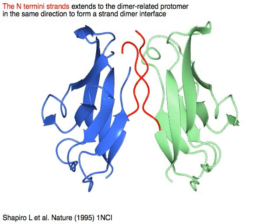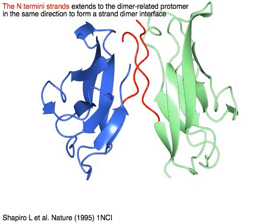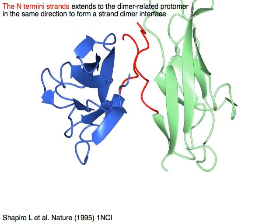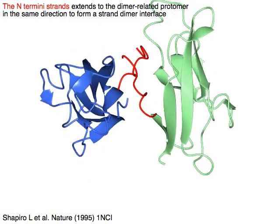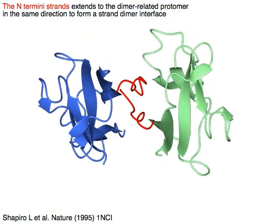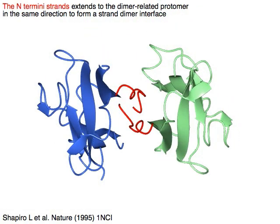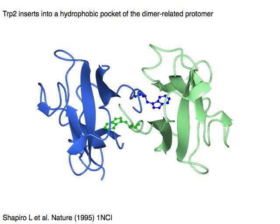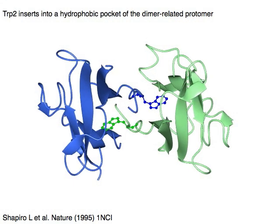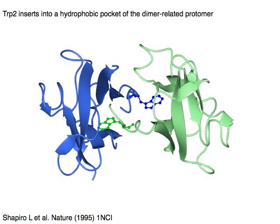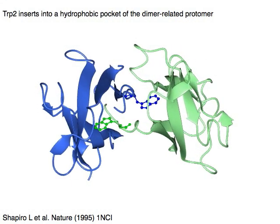The N-termini strand shown in red extends to the dimer-related protomer in the same direction to form a strand-dimer interface. Tryptophan-2 inserts into a hydrophobic pocket of the dimer-related protomer.